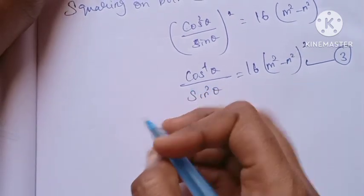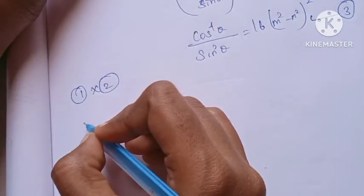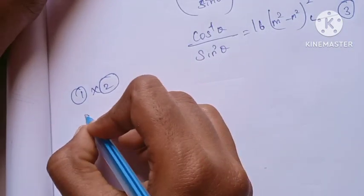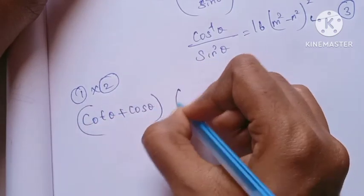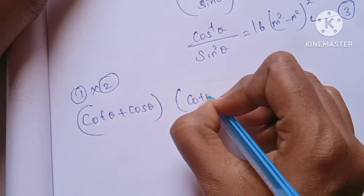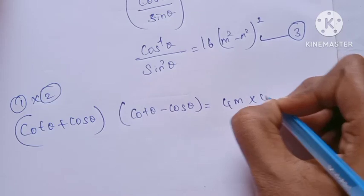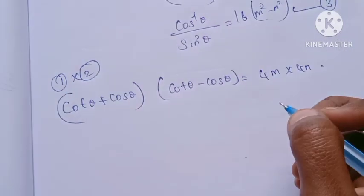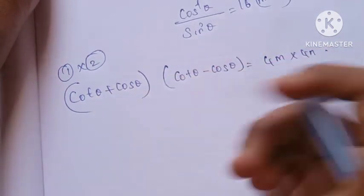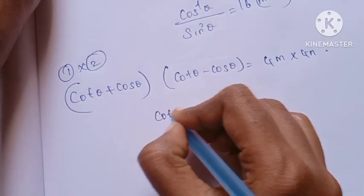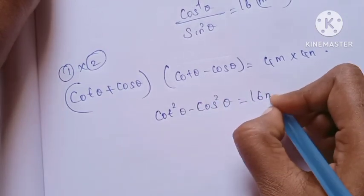Now multiply equation 1 by equation 2. We have cos theta plus cos theta into sin theta, times cos theta minus cos theta into sin theta, equals 4m into 4n. Using (A plus B)(A minus B) equals A squared minus B squared, we get 16mn.